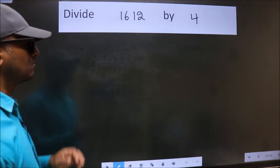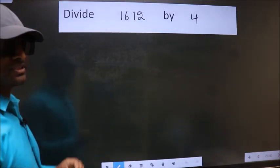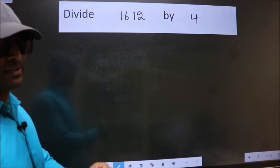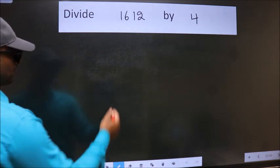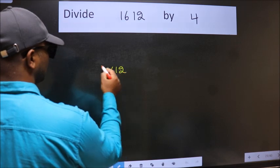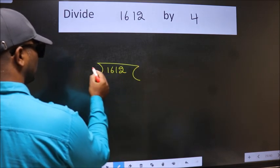Divide 1612 by 4. To do this division, we should frame it in this way: 1612 here, 4 here.